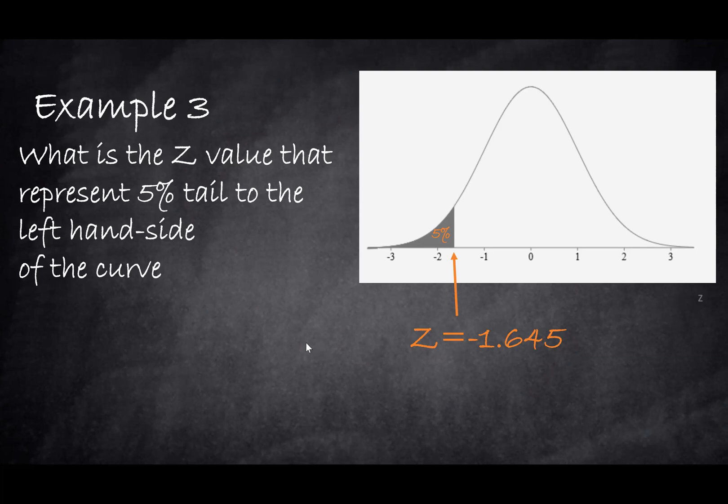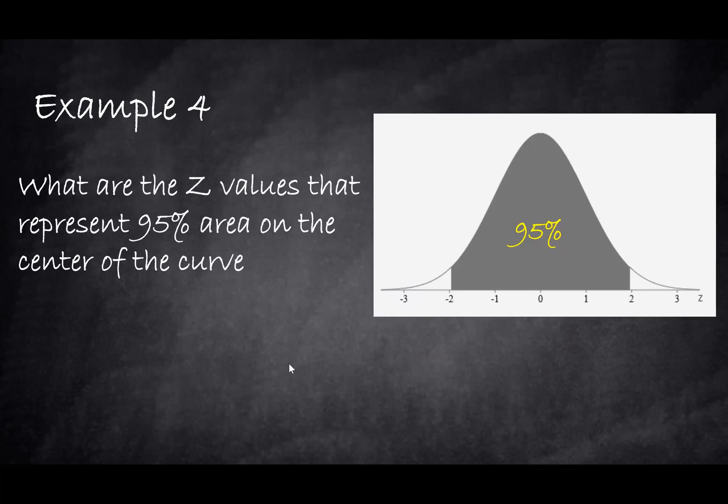Let's see another example. Example number four is asking you: what are the Z values that represent 95% area on the center of the curve? We have on the center of the curve 95%. How do we find exactly what are the Z values that represent the cutoff values?